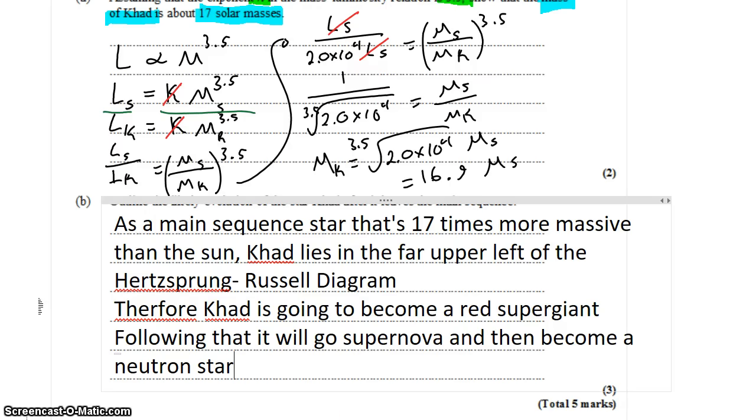To differentiate between whether or not it would be a neutron star or black hole, you would have to know what the mass of the core of that red supergiant was so that you could apply the Oppenheimer-Volkoff limit, which we don't have that information for CAD. So what we could say is that it will become a neutron star or black hole.